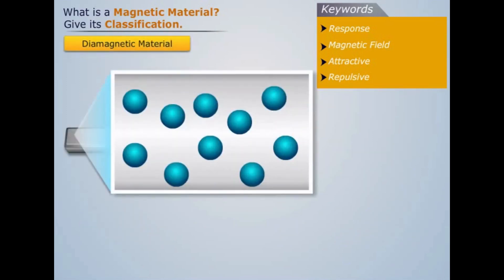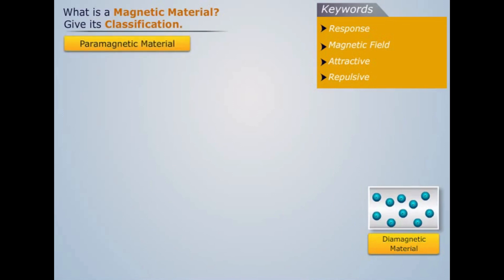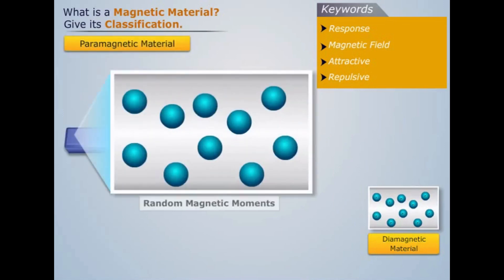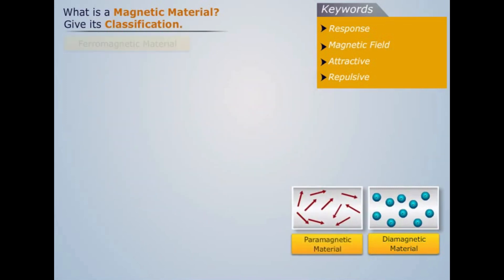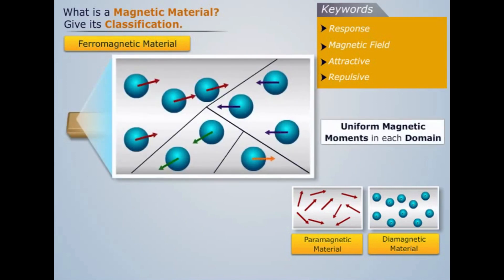Diamagnetic materials are those materials in which the net magnetic moment is zero. Paramagnetic materials are those materials which have random magnetic moments. Ferromagnetic materials are those materials which consist of magnetic domains with uniform magnetic moments in each domain.